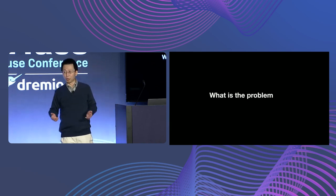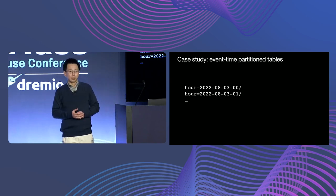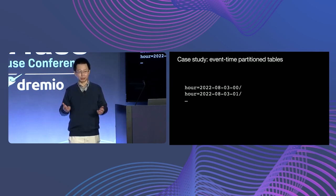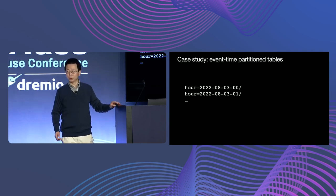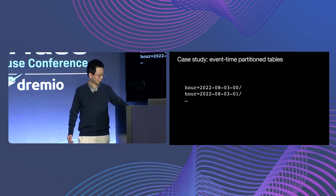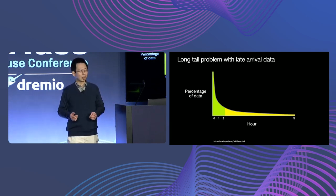So what is the problem we're trying to solve here today? Many Iceberg tables are partitioned by time, like hourly or daily. Time partition tables can support time range queries effectively using partition-based pruning. For some use cases, this time needs to be event time — the time that the events are generated, probably on the device side. With event time, data can come in late: hours, days, weeks, months.